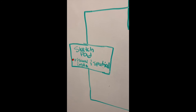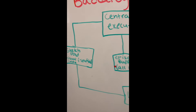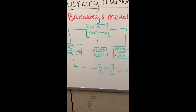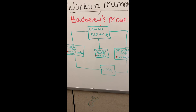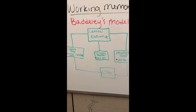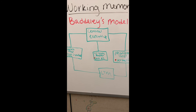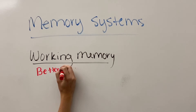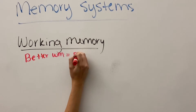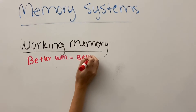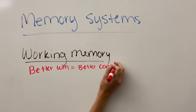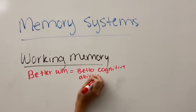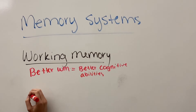This all goes into long-term memory, which is the permanent storage of integrated events. Working memory combines ideas from long-term memory with short-term memory to make it a more collaborative theory.